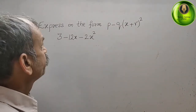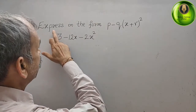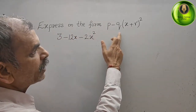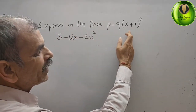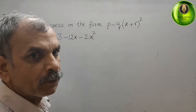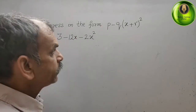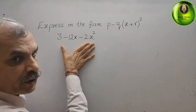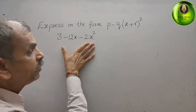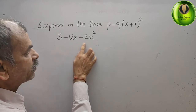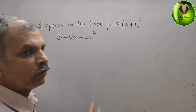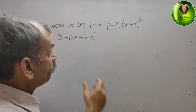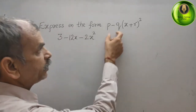The question is expressed in the form of p minus q(x + r) whole square. The equation given is 3 minus 12x minus 2x square, and we have to make it in this form.